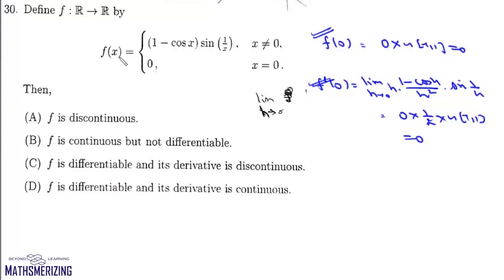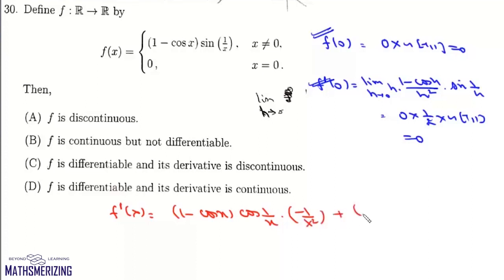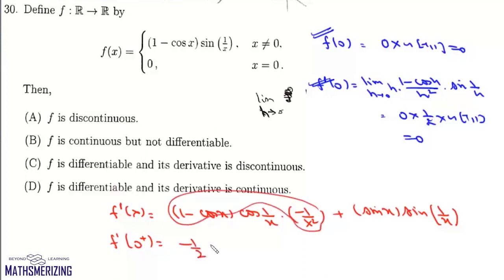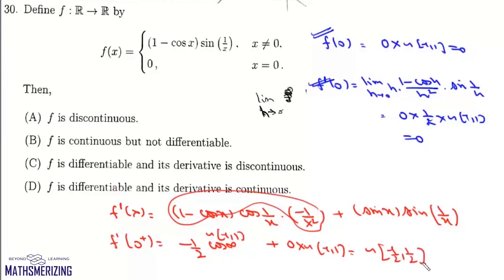Now we check continuity of the derivative. f'(x) = (1 − cos x)·cos(1/x)·(−1/x²) + sin x·sin(1/x). For the right-hand limit as x→0⁺: (1−cos x)/x² → 1/2, and cos(1/x) oscillates between −1 and +1, giving an oscillating value between −1/2 and +1/2. So the derivative is discontinuous at x = 0, and the answer is option C.